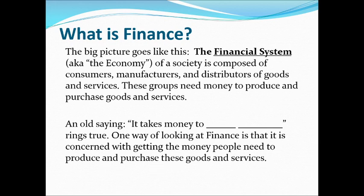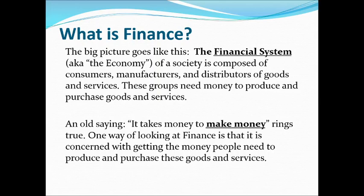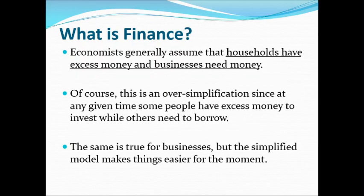The big picture goes like this. The financial system, also known as the economy of a society, is composed of consumers, manufacturers, and distributors of goods and services. These groups need money to produce and purchase goods and services. You know the old saying, it takes money to make money. Finance is concerned with getting the money people need to produce and purchase goods and services — it helps people on both the producing end as well as the consumption end.